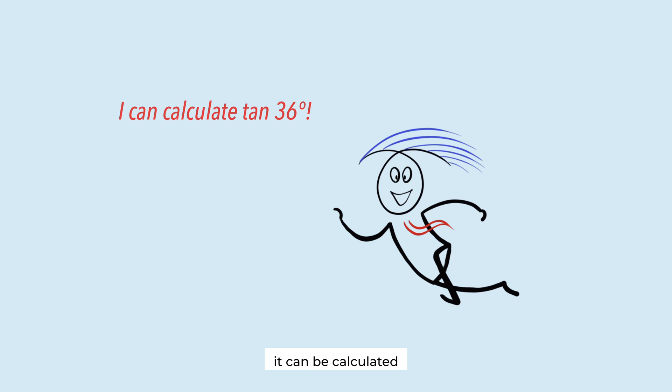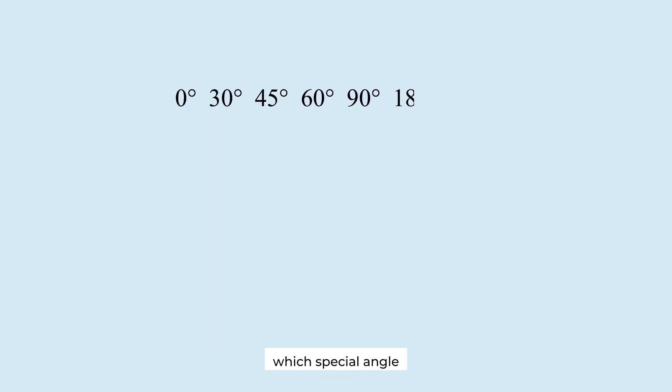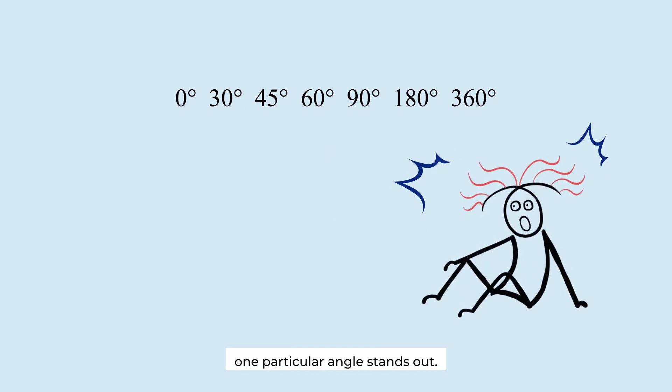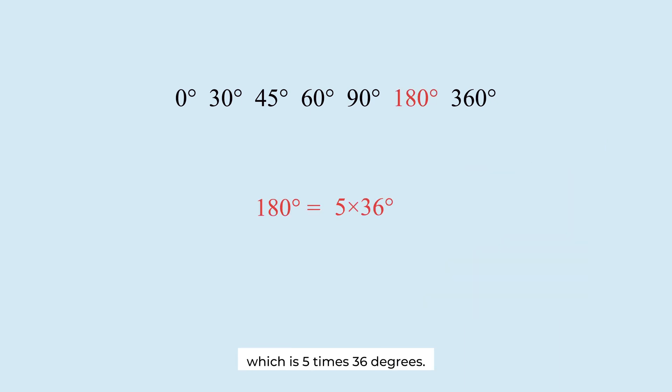It can be calculated using its relationship with a spatial angle. Which spatial angle has a unique relationship with 36 degrees? One particular angle stands out: 180 degrees, which is 5 times 36 degrees. And the value of tangent 180 degrees is well known. It is 0.